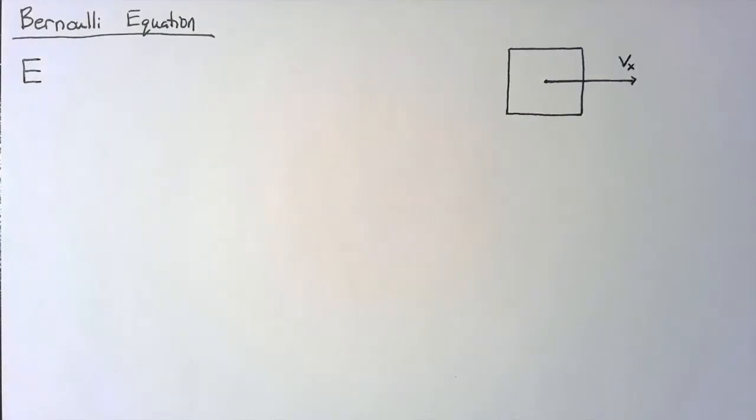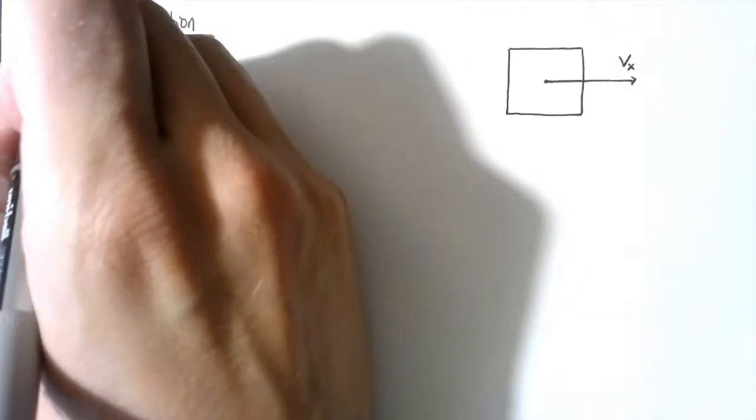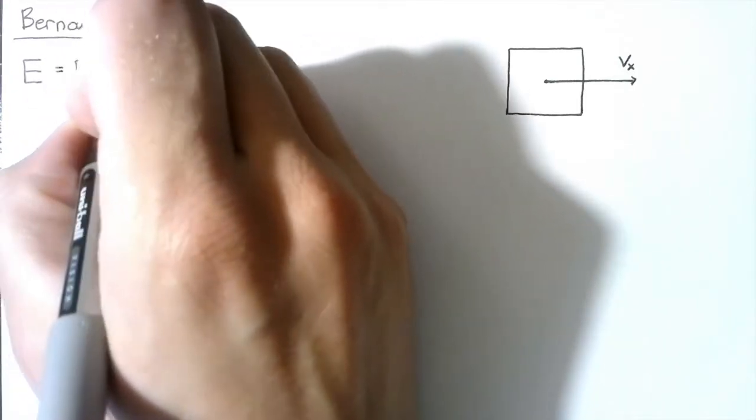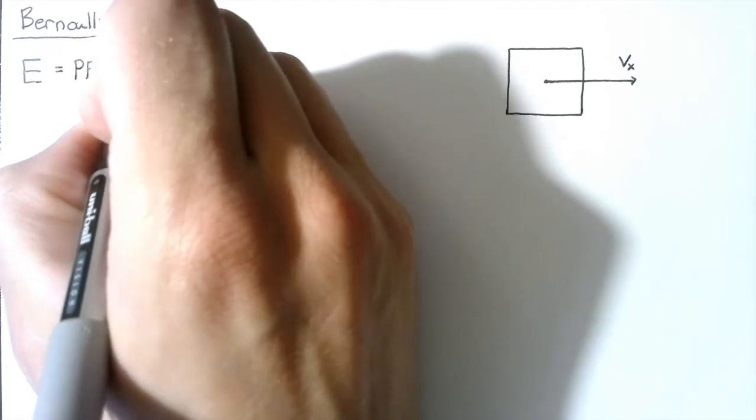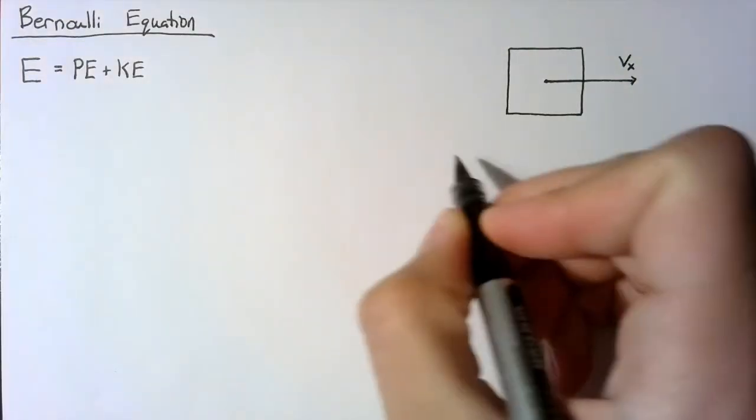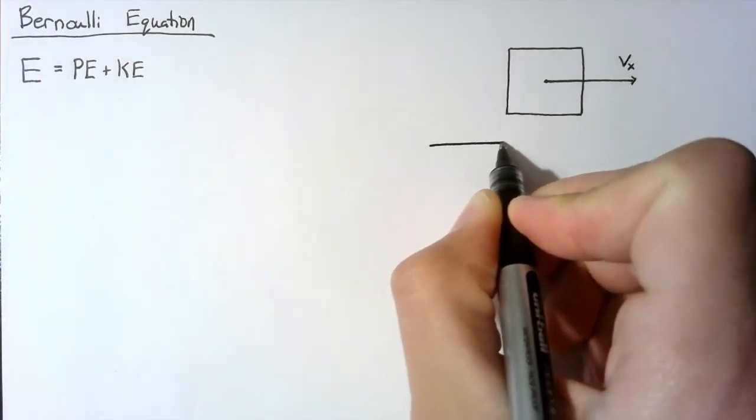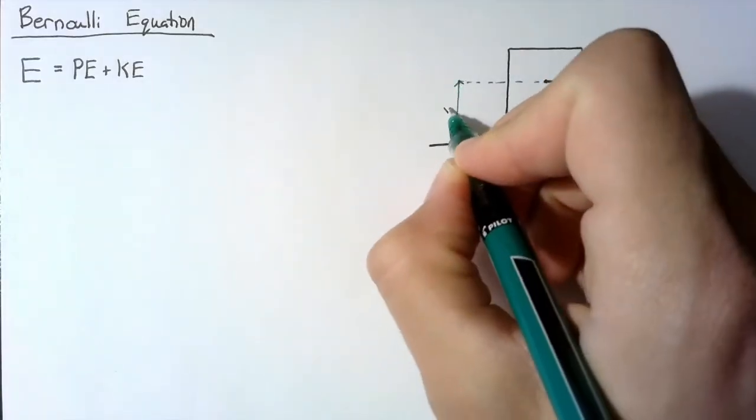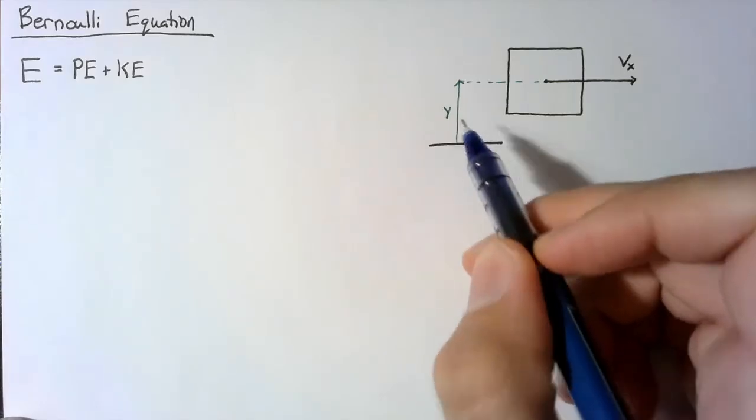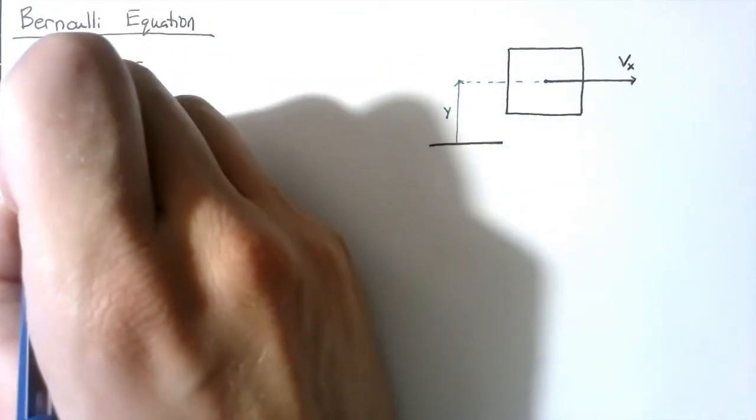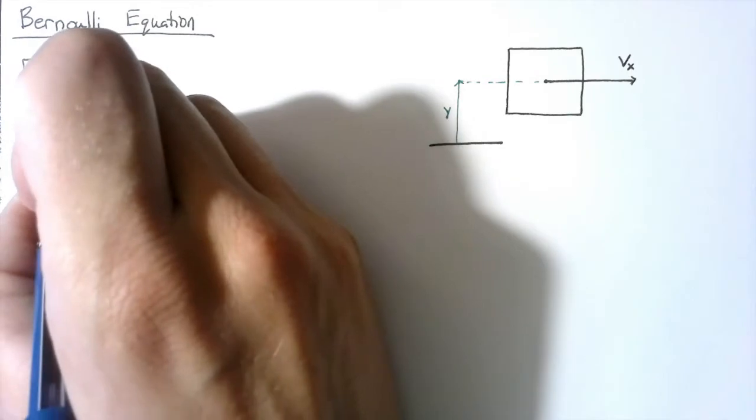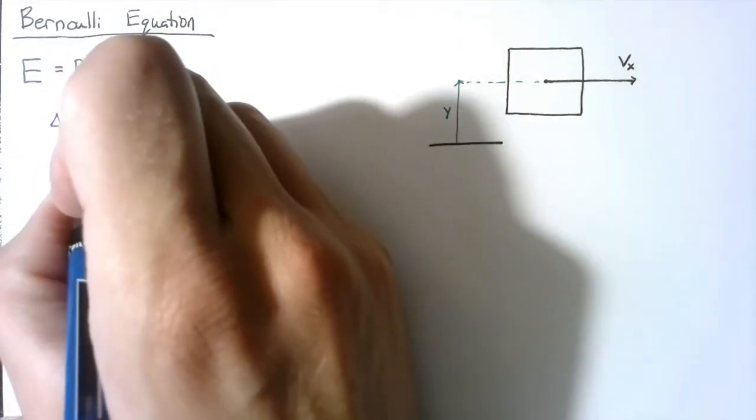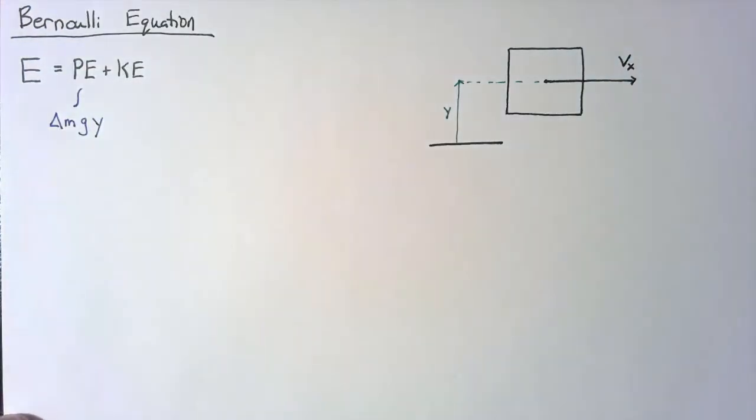What we're going to do with this fluid element is look at conservation of energy. We're going to be focusing on the potential energy and the kinetic energy. The potential energy is based on gravity, so I'm going to say that this distance here is y, which means that the potential energy is going to be the mass, delta m, of our differential element multiplied by gravity multiplied by the distance y from our reference point.